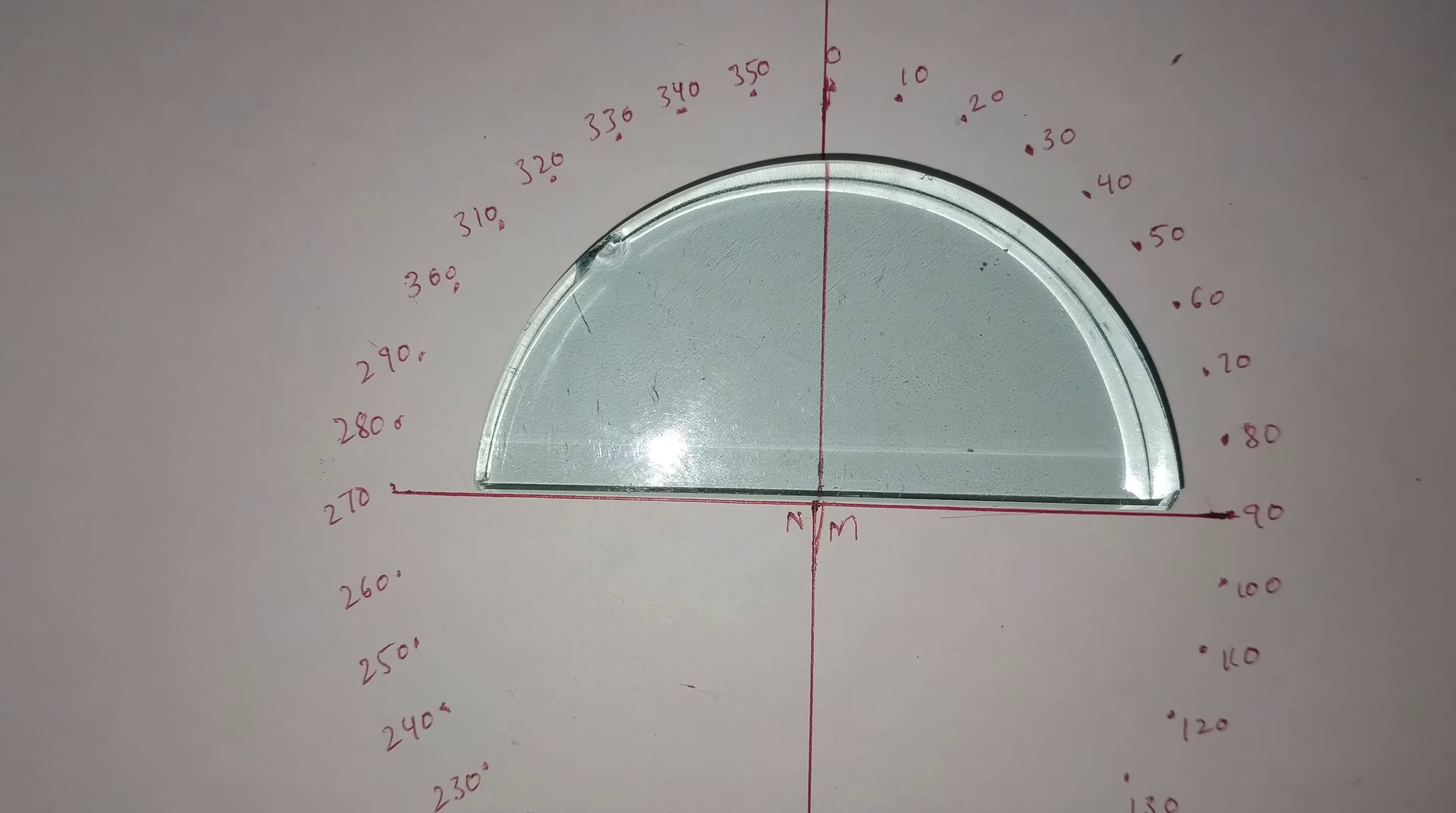On the bisecting line, I am placing the semi-circular glass slab. After placing the semi-circular glass slab, we have to incident a light ray by using a laser light. Here I am incidenting a light ray by using a laser light.